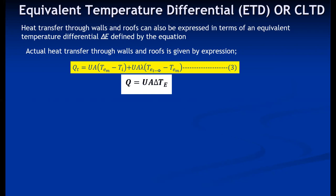In order to calculate the instantaneous heat transfer considering the effect of thermal capacity, this equation is used. The first term indicates the mean rate of heat transfer, and the second component is the fluctuating component, which mainly depends on the decrement factor and time lag in heat transfer. If we equate these two equations, delta T can be defined accordingly.